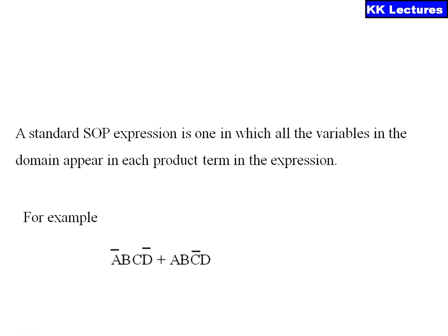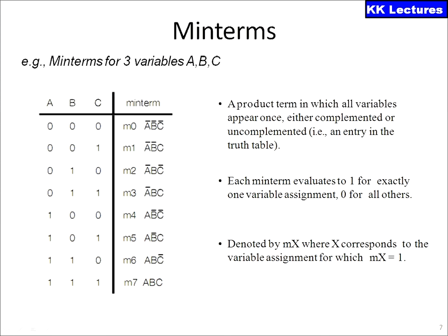This is called a standard sum of products. A product term in which all variables appear once either in complemented or uncomplemented format is called a min term. Each min term evaluates to 1 for exactly one variable assignment and 0 for all others, denoted by mₓ where x corresponds to the variable assignment for which mₓ equals 1. As noted, the normal variable takes the value of 1 and the complemented variable takes the value of 0 for min terms.